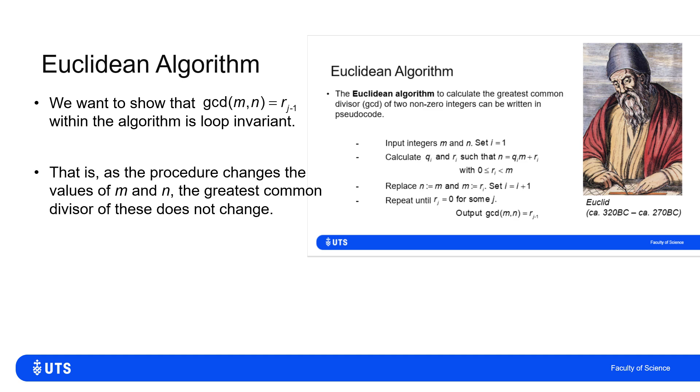So that's what I want to show. I want to show that this procedure of shuffling around what the M and the N are does not change the underlying truth of what the greatest common divisor of my current M and my current N is.